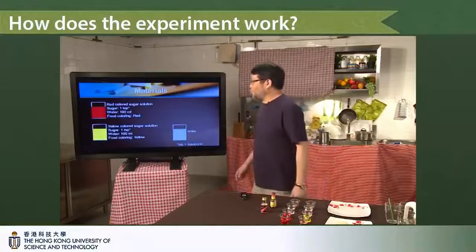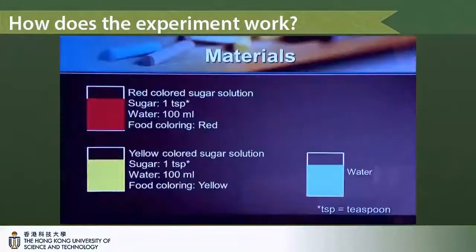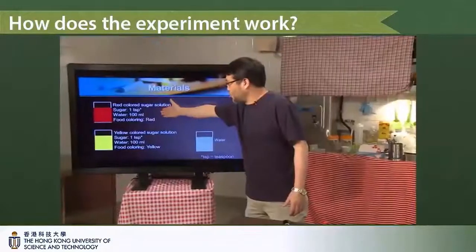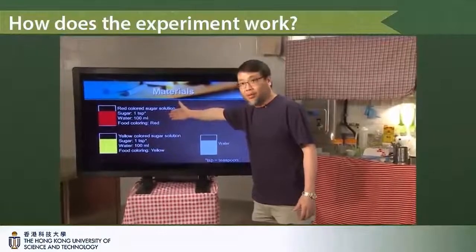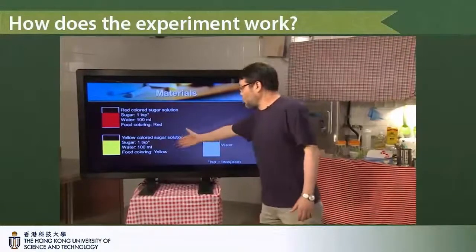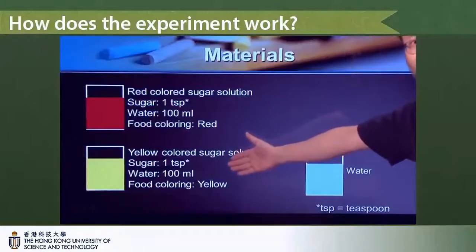What we need to do is prepare two solutions. One, we use the dye that gives the solution a red color. We prepare these drinks like this. And the second one we use the yellow dye to give you a yellow color solution.